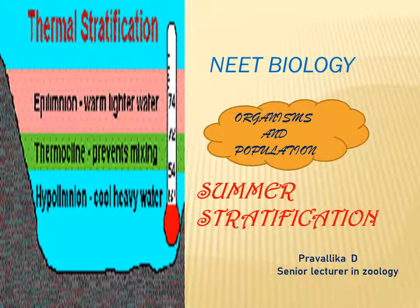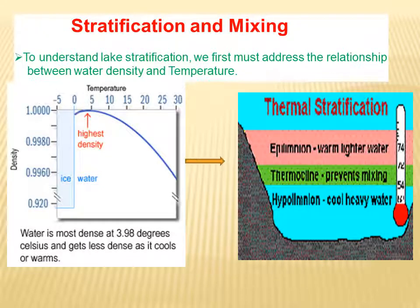Summer stratification. In order to understand summer stratification, let us go through the points of the relationship between water and temperature. Water has maximum density at 4 degree centigrade. When the temperature is increased, density decreases. In the same way, when the temperature decreases, density also decreases. The density is highest only at 4 degree centigrade.